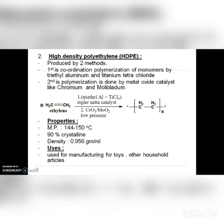High density polyethylene is produced by two methods: using the Ziegler-Natta catalyst, and using metal oxides. Properties of HDPE include a melting point of 144 to 150°C, it is 90% crystalline, and has a density of 0.956 g/mL. HDPE is used for manufacturing toys and other household articles.